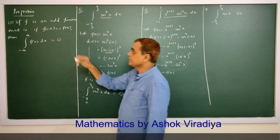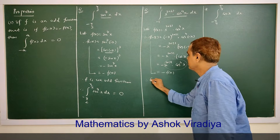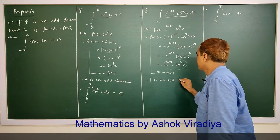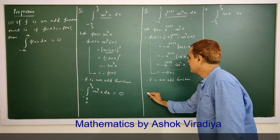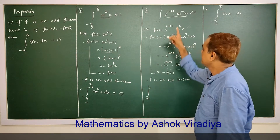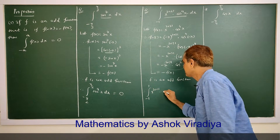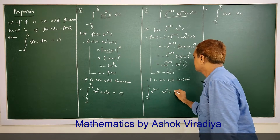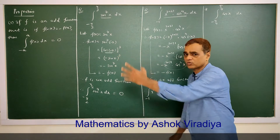So the integral is zero. Therefore the integral from minus 1 to 1 of f(x) dx is zero by this rule.